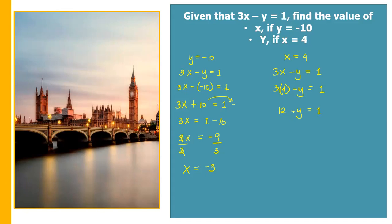Separate the constant: negative y equals 1. Then this positive 12 is transferred to the other side of the equation, it will become negative — so negative 12. Therefore, negative y equals 1 minus 12, which equals negative 11.